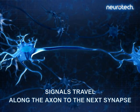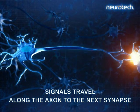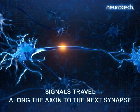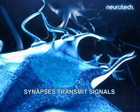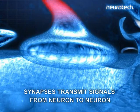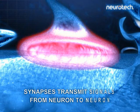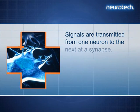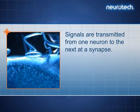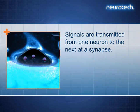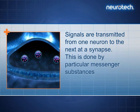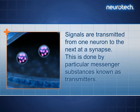Signals travel along the axon to the next synapse. Synapses transmit signals from neuron to neuron. Signals are transmitted from one neuron to the next at a synapse. This is done by particular messenger substances known as transmitters.